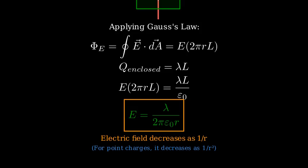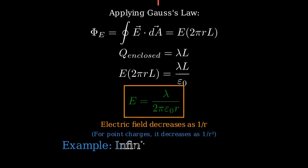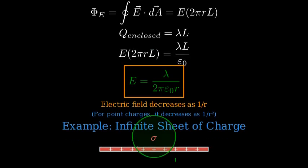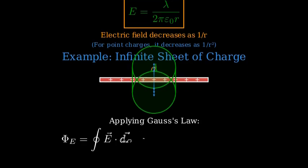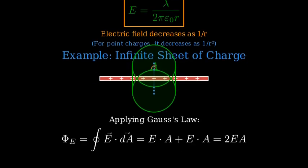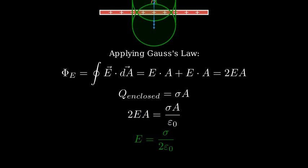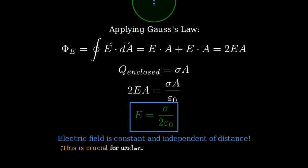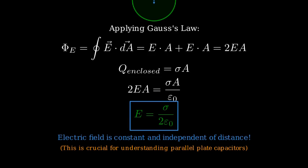Now let's find the electric field due to an infinite sheet of charge. Consider an infinite sheet with a uniform surface charge density σ. We use a pillbox-shaped Gaussian surface — a flat cylinder with a very small height — with the sheet passing through its center. Due to symmetry, the electric field must be perpendicular to the sheet and equal in magnitude on both sides. Applying Gauss's Law, the flux through the top and bottom circular faces of the pillbox is E·A + E·A = 2EA, and the flux through the cylindrical side is zero since E is parallel to that surface. The charge enclosed is σA. Solving for E, we get E = σ / (2ε₀). Remarkably, the electric field is constant and doesn't depend on the distance from the sheet — a very important result for understanding parallel plate capacitors.